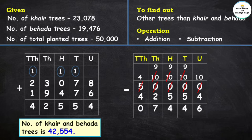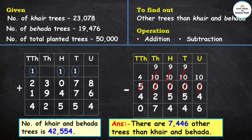After subtracting kher and bhaida trees from total trees, the answer is 7,446. There are 7,446 other trees than kher and bhaida.